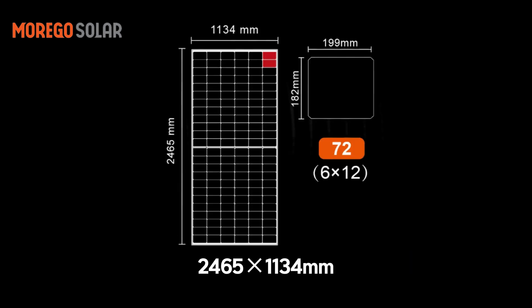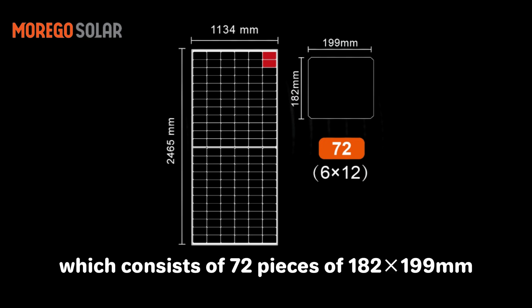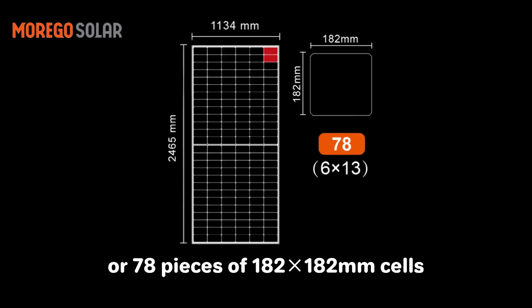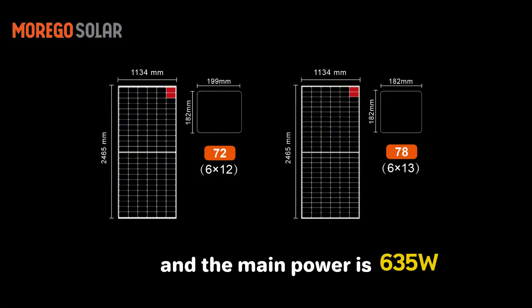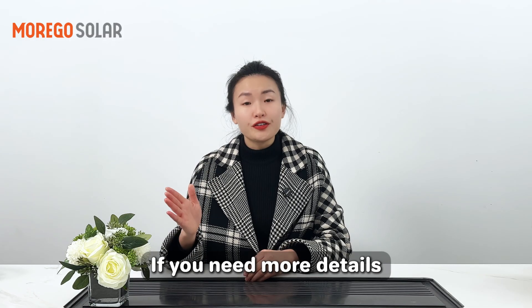Fourth one: 2465×1134mm, which consists of 72 pieces of 182×199mm cells, or 78 pieces of 182×182mm cells, and the main power is 635 watts. If you need more details,